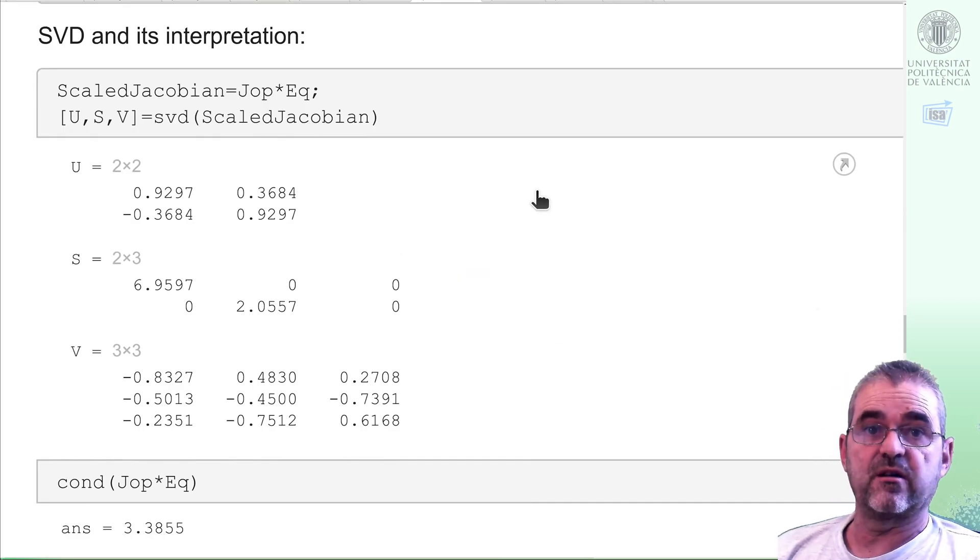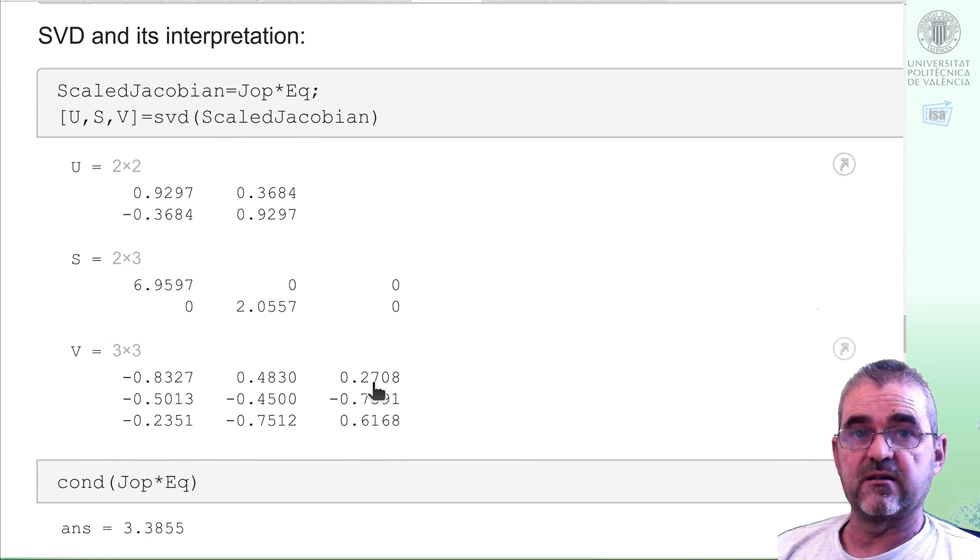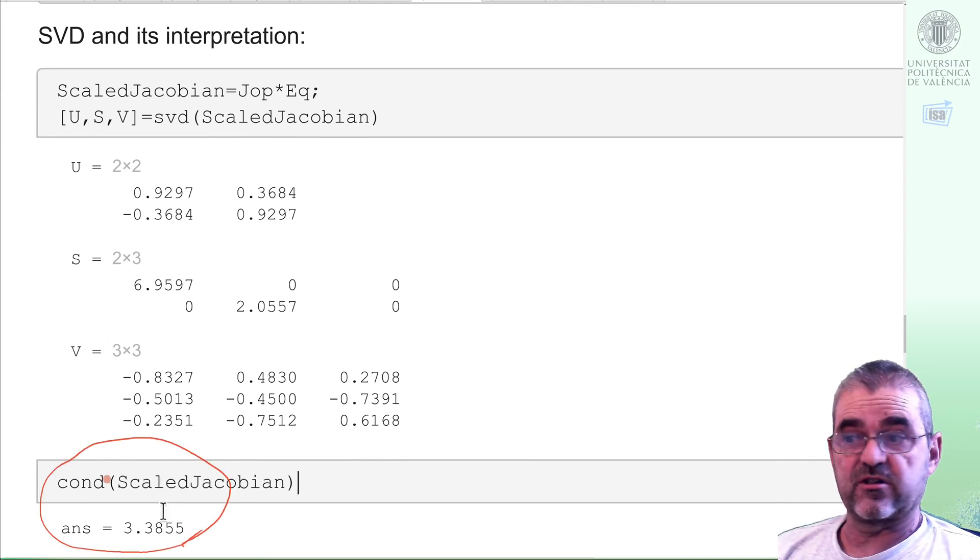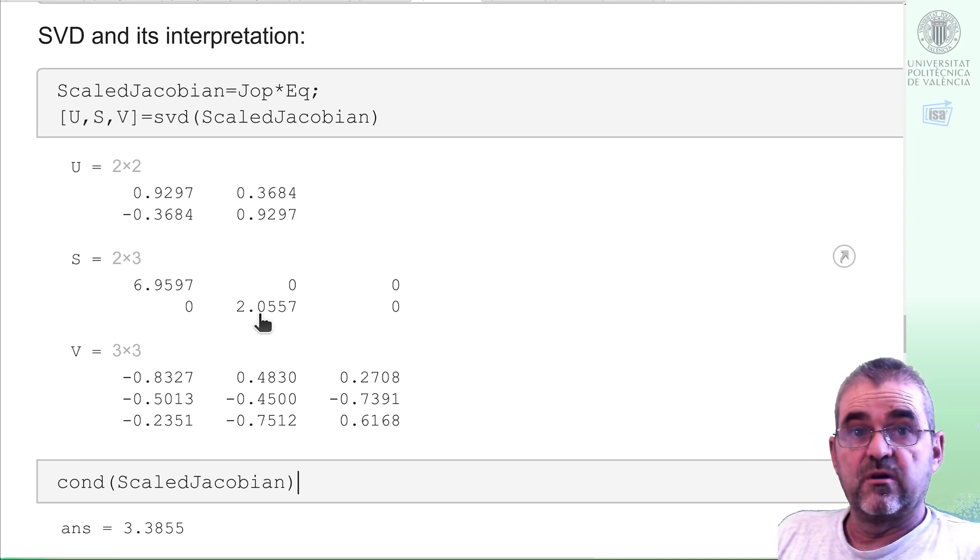The last thing of interest in analyzing my Jacobian is the condition number, which we have down here. It's 3.4 and it's somehow reasonable. It means that the coefficient between the high gain and low gain maneuvers is 3.4. We may consider that to be reasonable, at least in comparison with other configurations close to singularities in which this condition number can be 30 or 30,000.